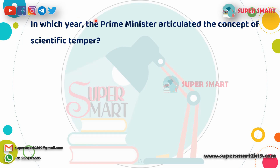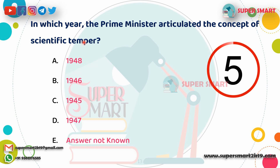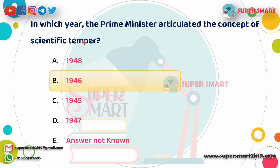Next question: In which year did the Prime Minister articulate the concept of scientific temper? The Prime Minister articulated it in his book. The answer is 1946.